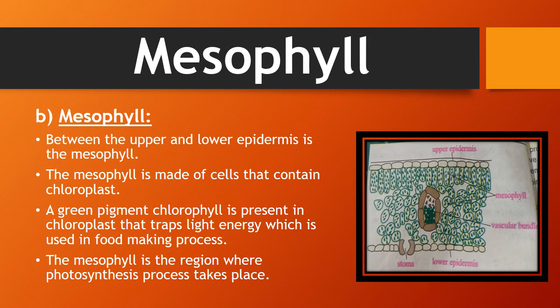Why does photosynthesis take place in the mesophyll? Because mesophyll contains chloroplasts, and chloroplasts have a green color pigment known as chlorophyll.